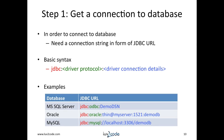Step one: getting a connection to a database. In order to connect to a database, we need to find the database. Remember, it could be local, on the network, or in the cloud. Using a similar approach to finding web resources on the internet, we can make use of a URL — in this case, a JDBC URL. The basic syntax is: jdbc:driverprotocol:driverconnectiondetails.